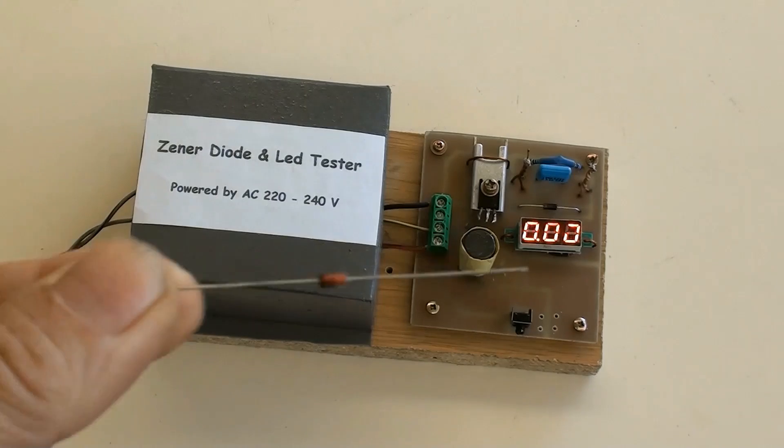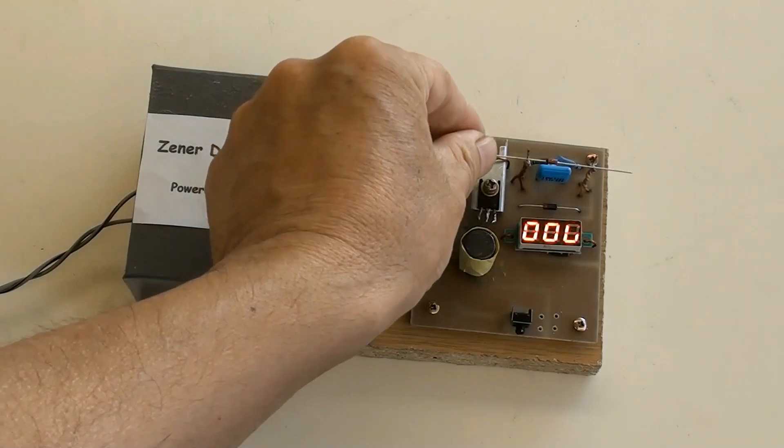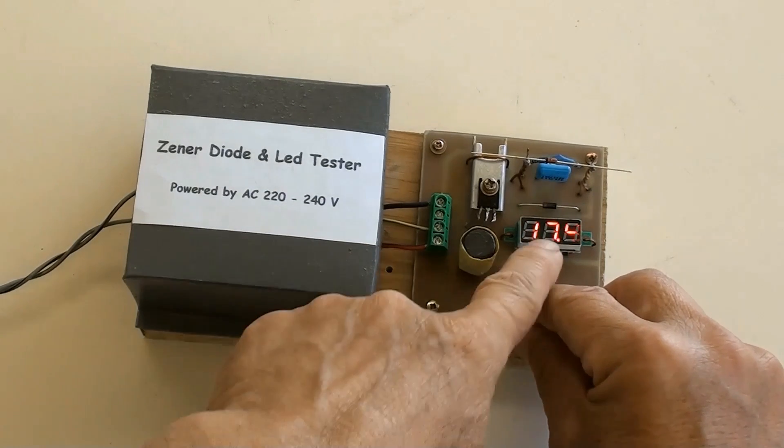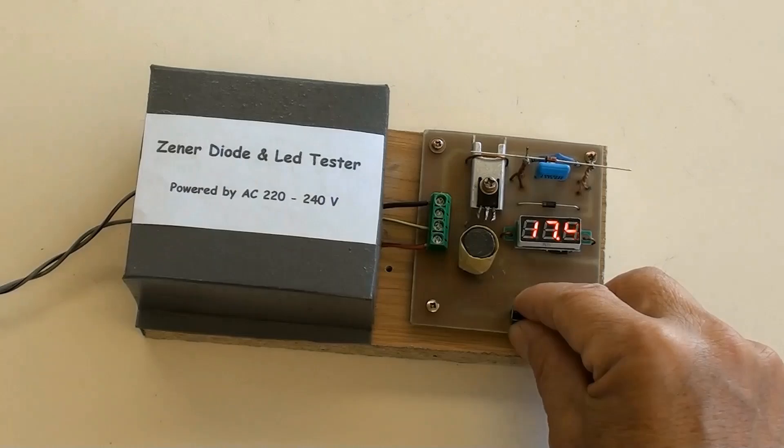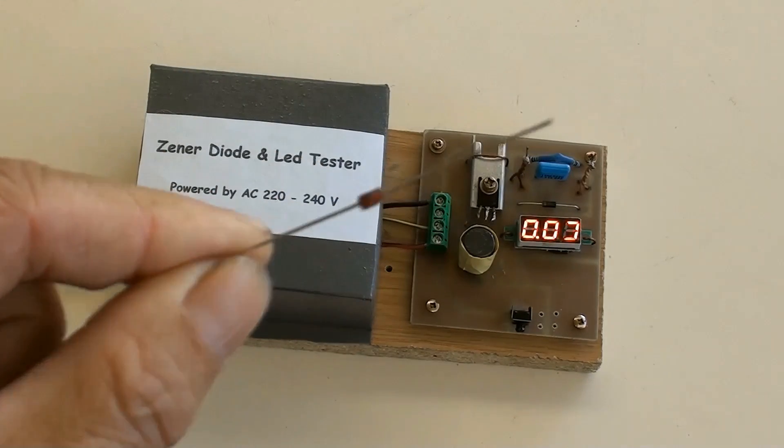Going to test this Zener diode. Leave it on tester stands. Then pushing the tactile switch. The mini digital voltage meter showed a voltage value of 17.4 volt. In the most case, this tester shows a bit undervalued. So this is 18 volt Zener diode.